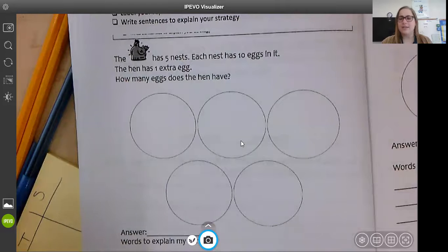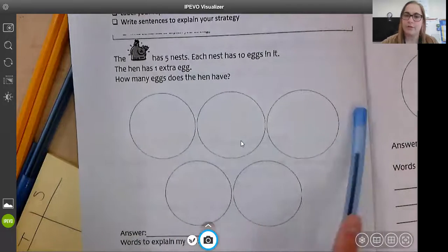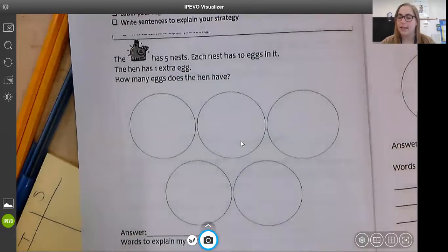All right. So I heard first the hen has five nests. And it looks like they already drew those nests on the picture for me. One, two, three, four, five. Five nests.